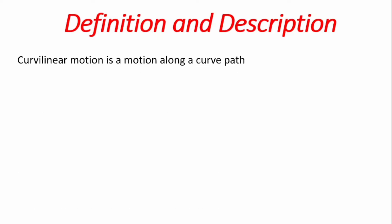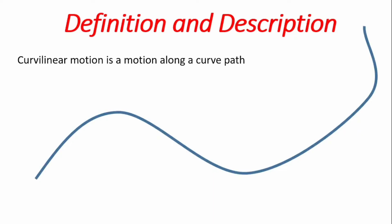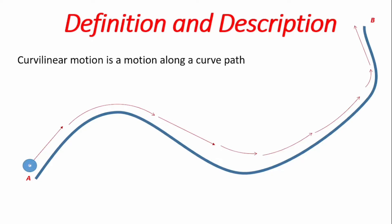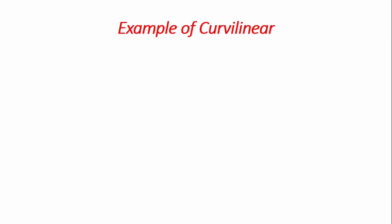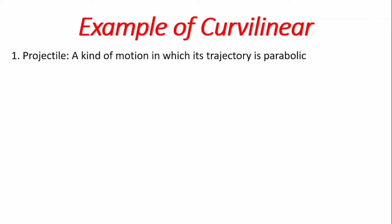Curvilinear motion is motion along a curved path. If we have a curved path such that one end is point A and the other end is point B, and there is a particle that moves through this path from point A to point B, because it's a curve, we see it is undergoing curvilinear motion.